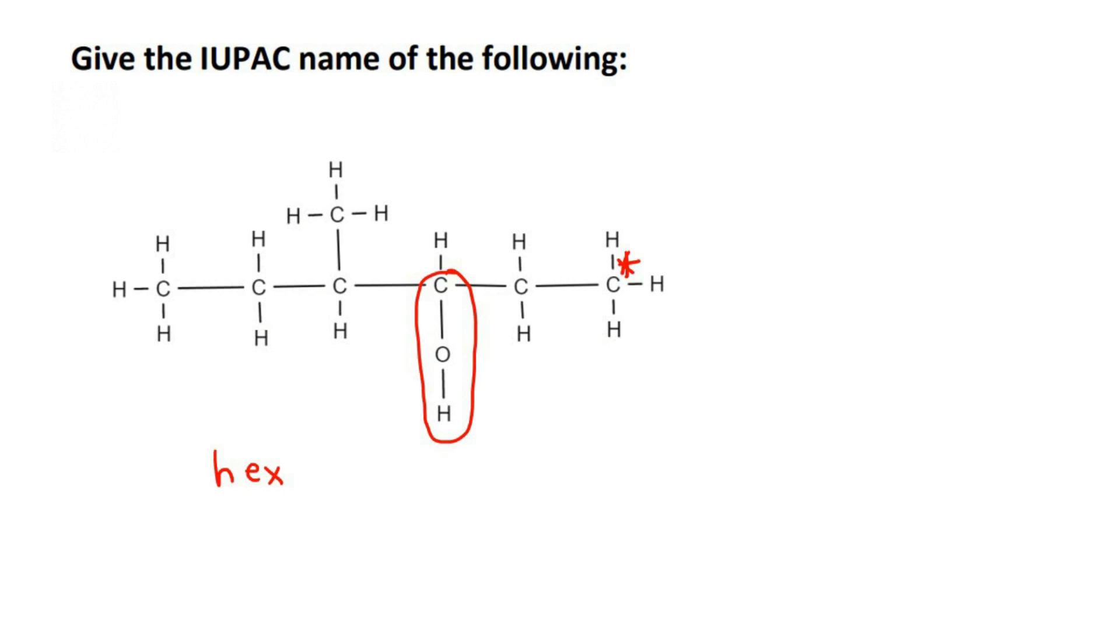Some of you might be like, yeah, but Kevin, shouldn't we start on this side because the branch is closer? Remember, it is not about the branch numbers. Only if we were dealing with alkanes or haloalkanes, for example, but for all the other molecules, you start naming on the side that is closest to the functional group.